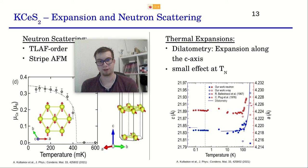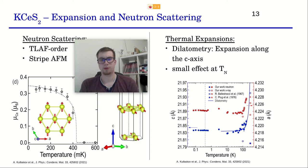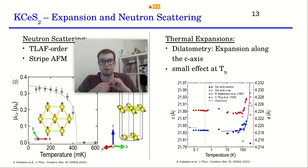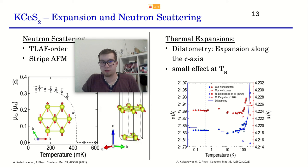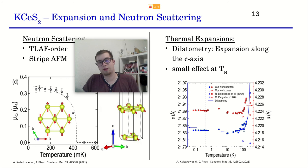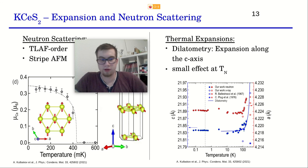So to summarize: potassium cerium sulfide has an antiferromagnetic ground state, while sodium ytterbium sulfide has a quantum spin liquid ground state — those are the two possibilities in this materials class. In the next video I want to discuss what the differences are between these two materials and why some end up in one category and some in the other, because on first glance it's not obvious why they are so different in their ground states. Bye and good luck with your studies.